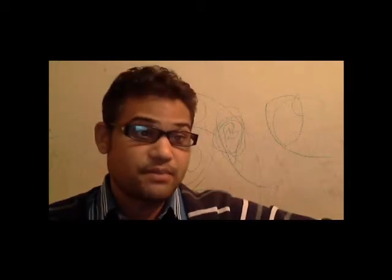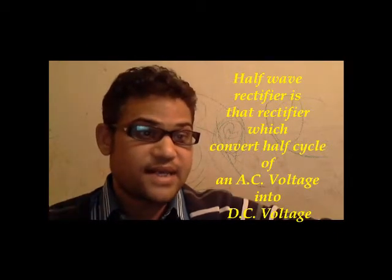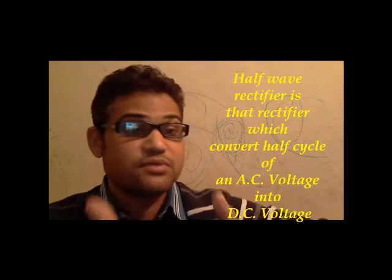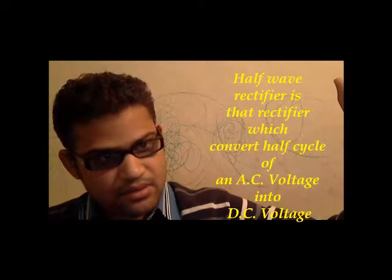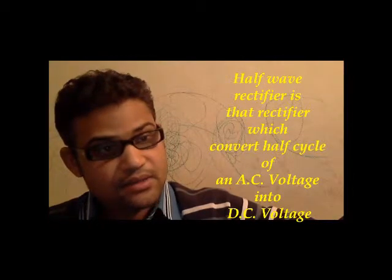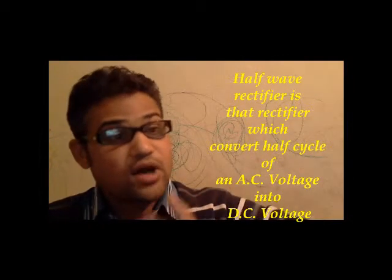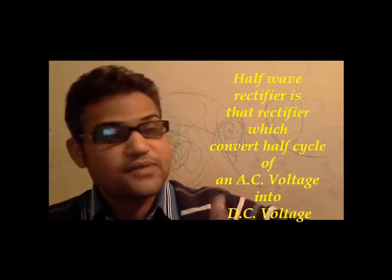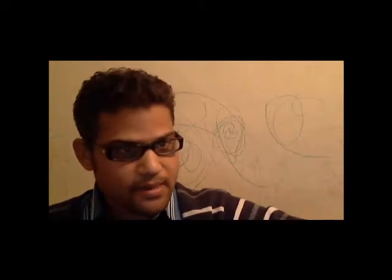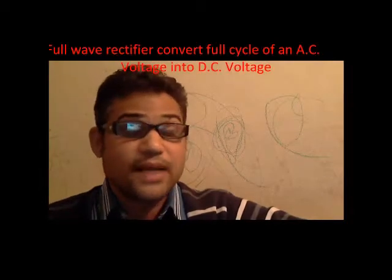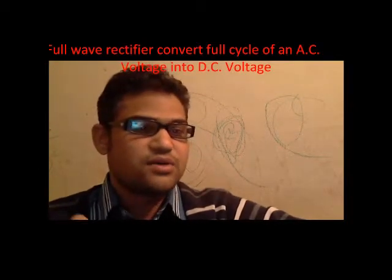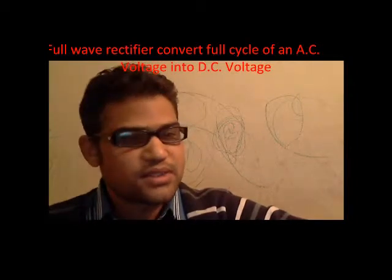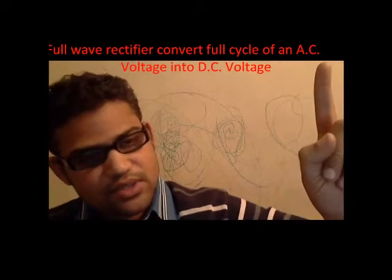Definition of half wave rectifier: a half wave rectifier is that rectifier which converts half cycle of AC voltage into DC. In a half wave rectifier, at the output we obtain only half cycle of AC voltage. Whereas a full wave rectifier is that device which converts the full cycle of AC voltage into DC voltage, as you can also see in the figure.